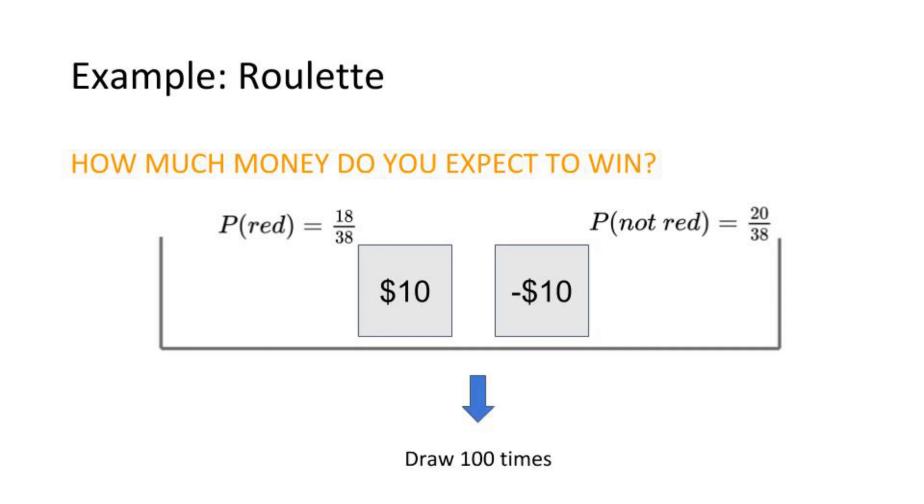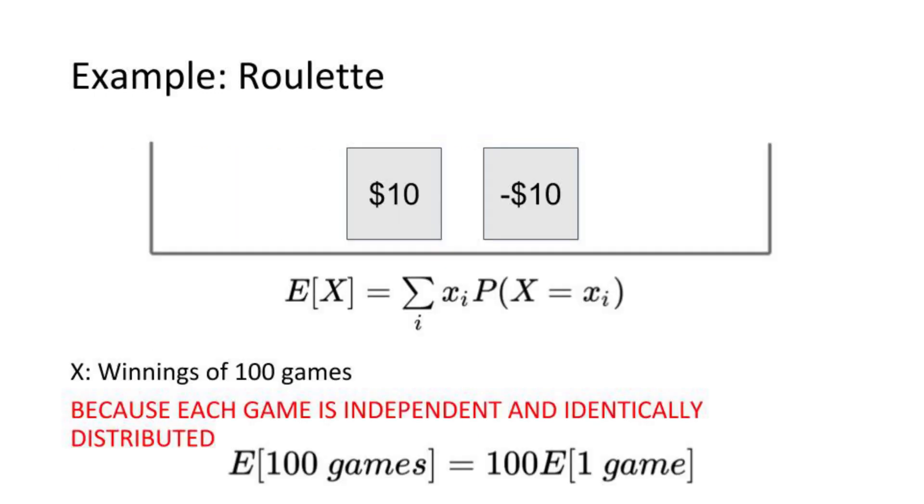And now I'm drawing from this box 100 times. And remember, because each game is independent and identically distributed, my expected value of the money I win in 100 games is just 100 times the expected number of dollars to win in one game.